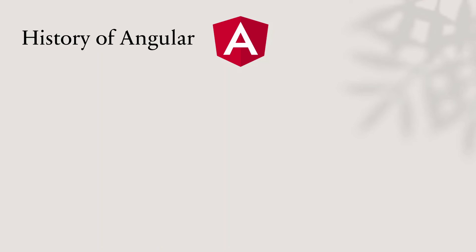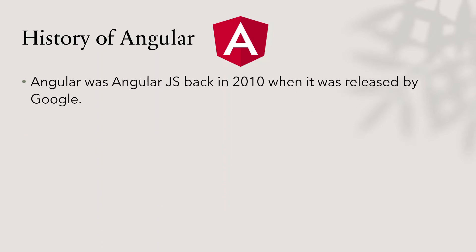Now let's look at the history of Angular. Angular was originally developed as AngularJS back in 2010. Several years after its initial release, the landscape of web development started to change — new advancements and standards in JavaScript emerged and Angular started to get left behind. So in 2014, Angular 2 was released. Angular 3 was skipped, and after that Google always upgrades the Angular version twice a year — once in March and once in November.